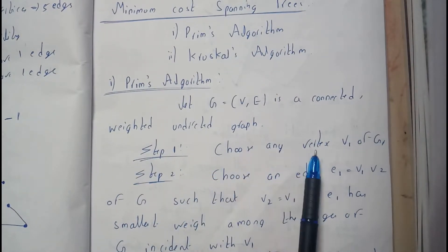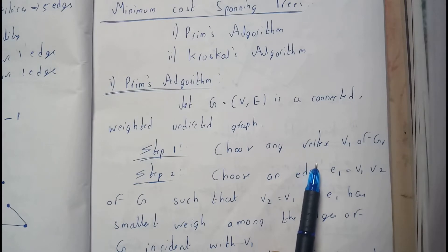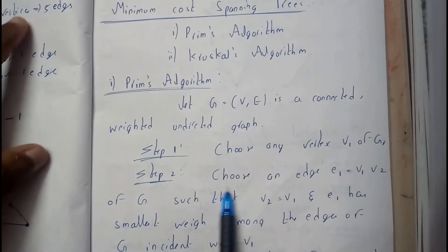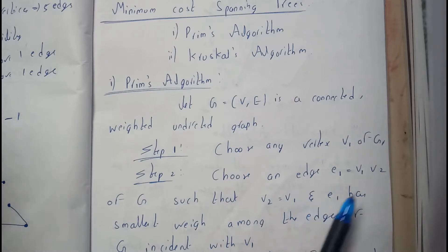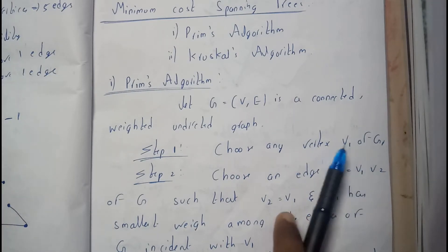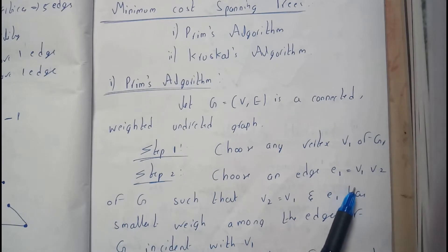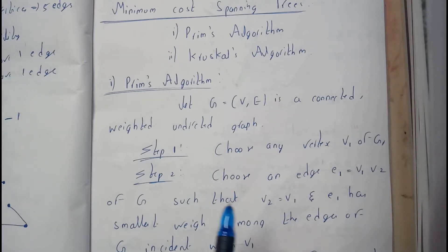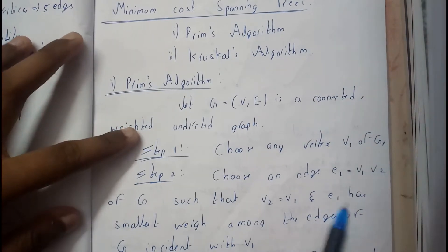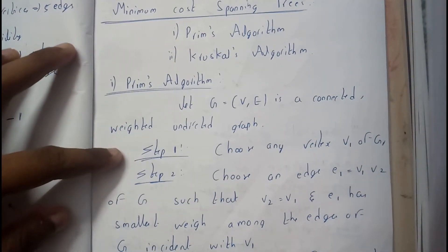Initially, step 1: choose any vertex as the starting vertex. Choose an edge E1 such that it starts from V1 to V2, such that the length or the weight of the graph should be less.